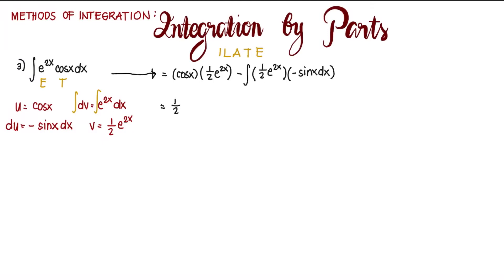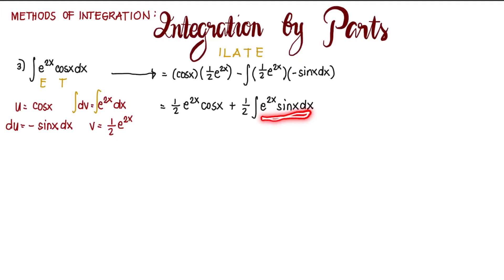We rewrite: that's 1/2 e to the power of 2x cosine x. Take note that there is a negative sign here and another negative sign here — that makes it a plus. Then put 1/2 outside, and the integral of e to the power of 2x sine x dx. As we can see, the resulting integral is not yet integrable because it's still a product between an exponential function and a trigonometric function. So we have to perform integration by parts again.